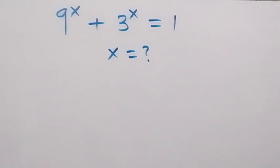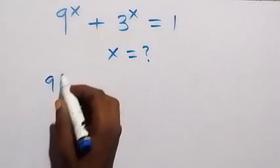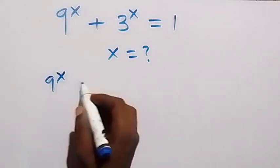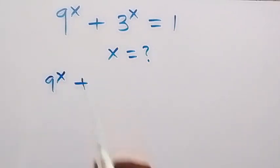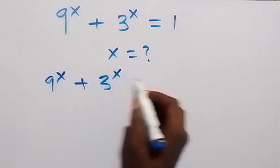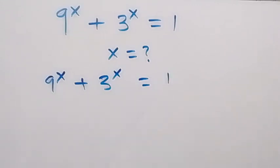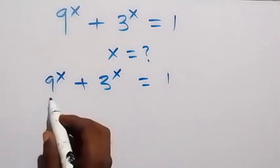Hello, you're welcome. Here we'll solve for x in this exponent problem. We have 9 raised to the power x plus 3 raised to the power x equals 1. From here, let's divide through by 9 raised to the power x.